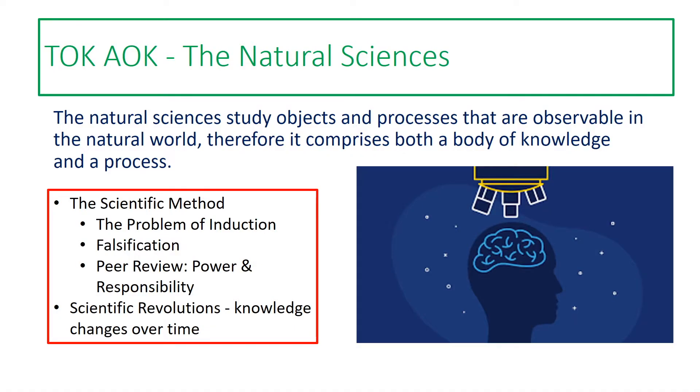Welcome to part two of my introduction to the natural sciences. Part one focused on the scientific method, looking in particular at falsification and peer review. Part two is going to be focused more towards the problems of the scientific method and how those problems lead to the idea that scientific knowledge changes over time — in particular, Thomas Kuhn's theory of scientific revolutions.